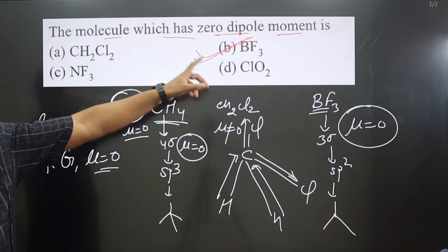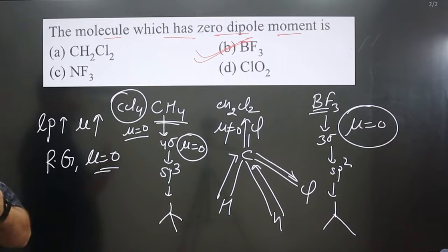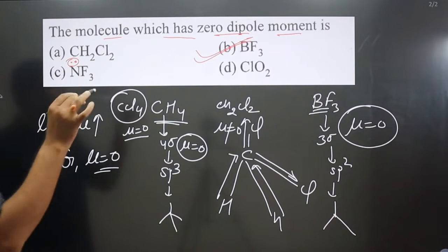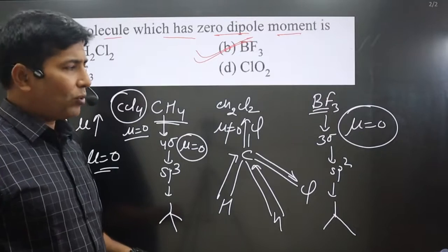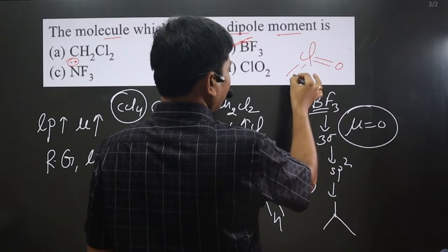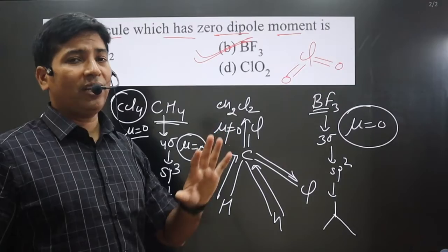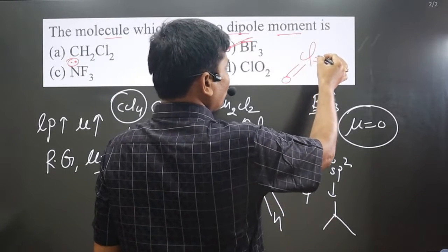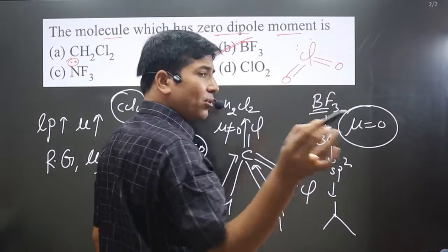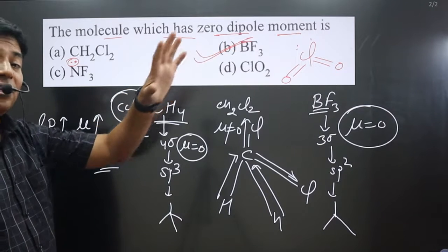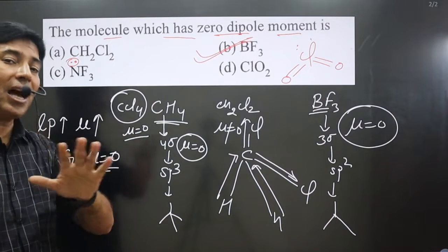To confirm: option C, nitrogen, forms three bonds but also has a lone pair, so dipole moment will never be zero. For ClO₂, chlorine has seven valence electrons; after forming two double bonds with oxygen, four electrons are used, leaving three electrons — so chlorine still carries a lone pair. Since it has a lone pair, dipole moment is not zero. Therefore, BF₃ with its regular geometry and zero dipole moment is the correct answer. Please share and subscribe to the channel.